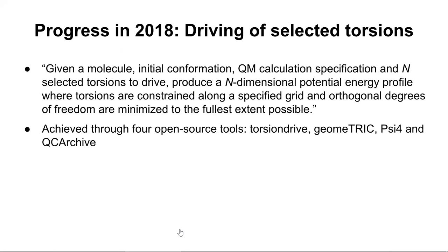The part I'd like to report progress on is the following task: given a molecule, an initial conformation, a quantum calculation specification, and n selected torsions to drive, produce an n-dimensional potential energy profile where torsions are constrained along the specified grid and orthogonal degrees of freedom are minimized to the fullest extent possible.